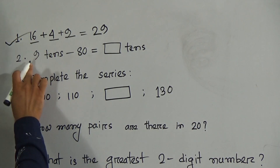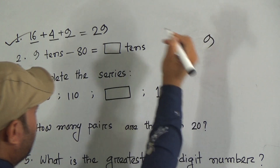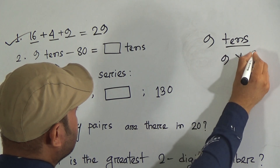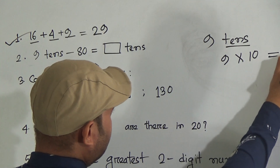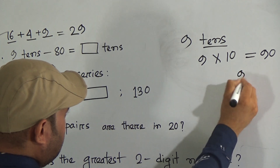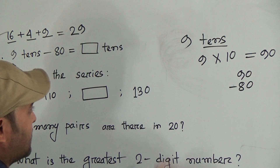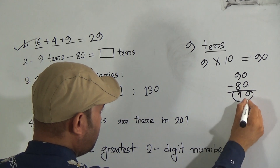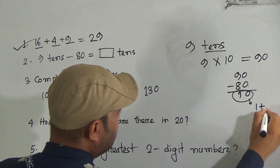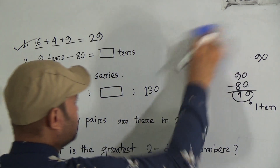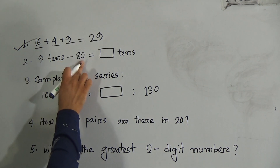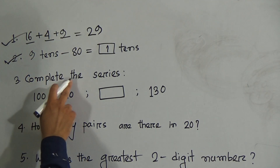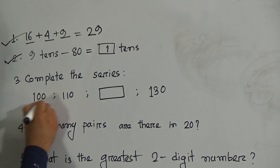Question number 2: 9 tens minus 18. First of all we have to know what 9 tens means. 9 tens means 9 multiply by 10, so 9 tens are 90. Now we have to subtract 80 from 90. 0 from 0 is 0, 8 from 9 is 1, so the answer is 10. That means 1 ten. So 9 tens minus 80 equals 1 ten.